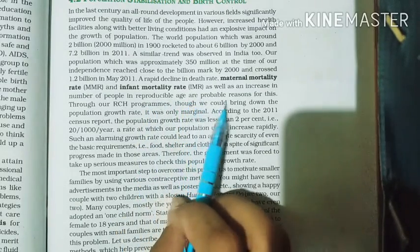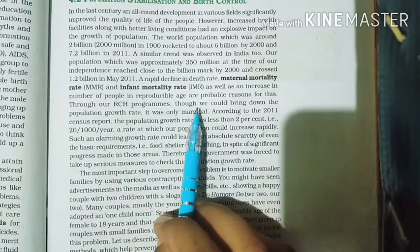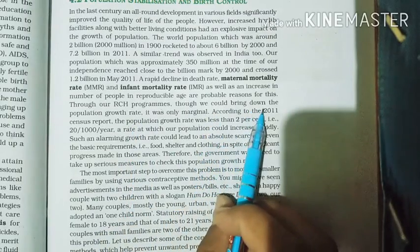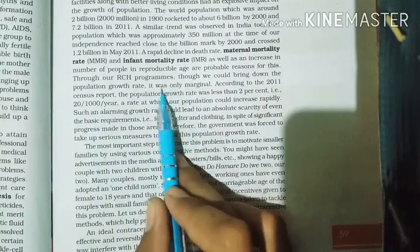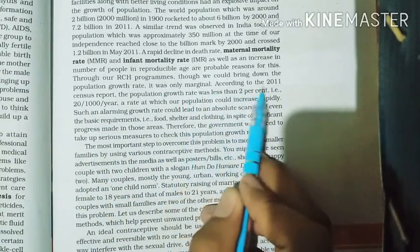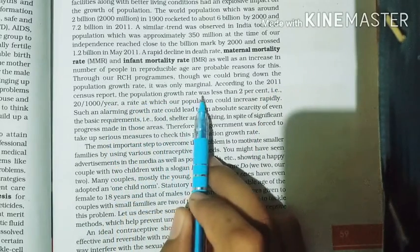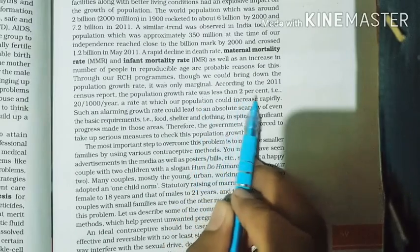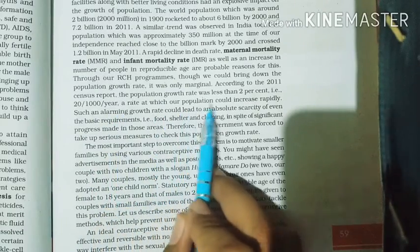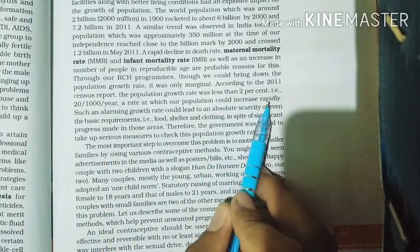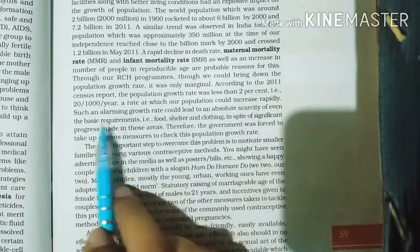The programs running to address population growth could only bring it down marginally. According to the 2011 census report, the population growth rate was less than 2%, that is 20 per thousand per year — the rate at which our population could increase rapidly. Such an alarming growth rate could lead to absolute scarcity of even basic requirements.